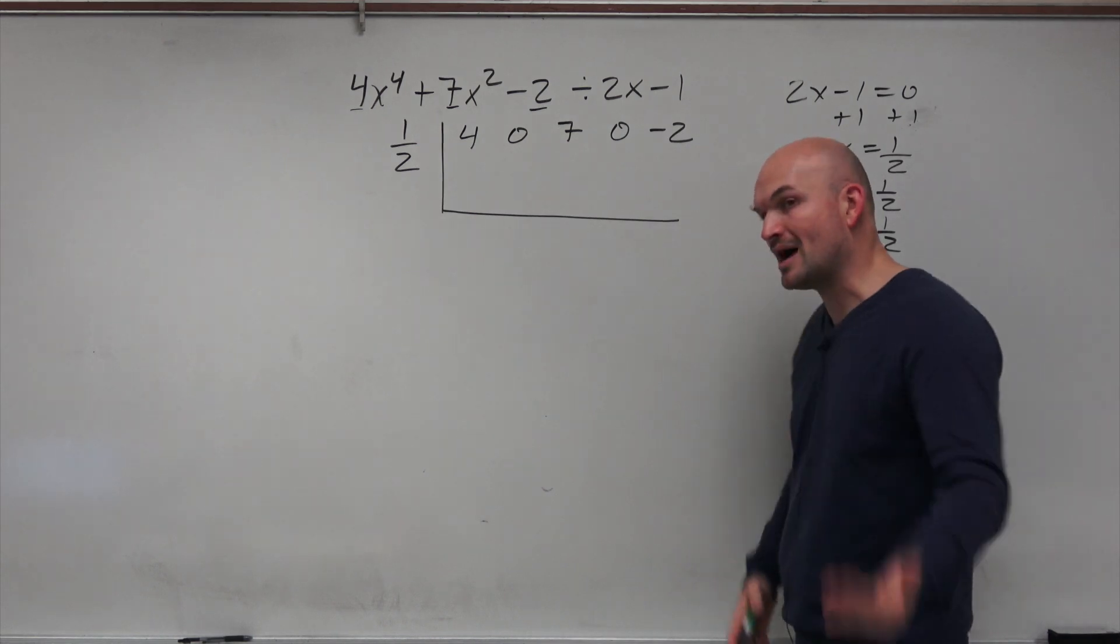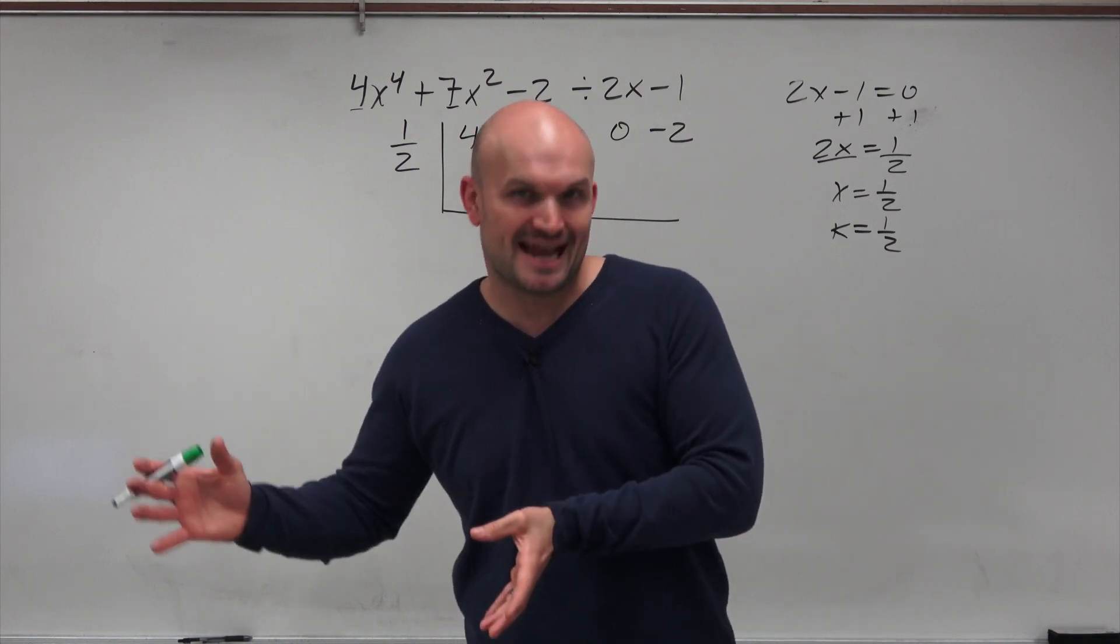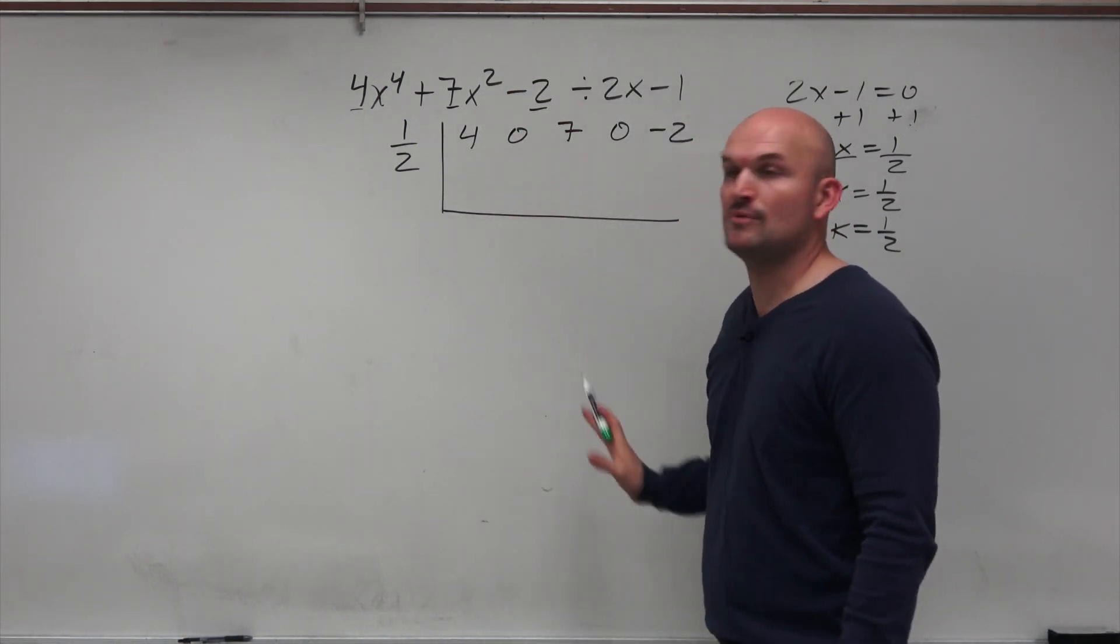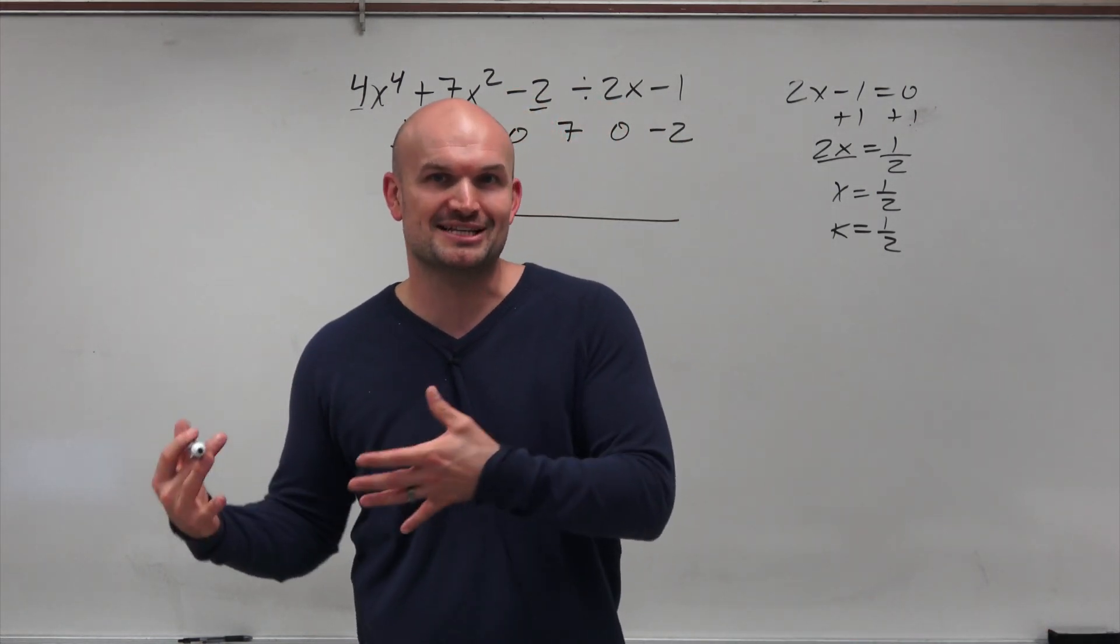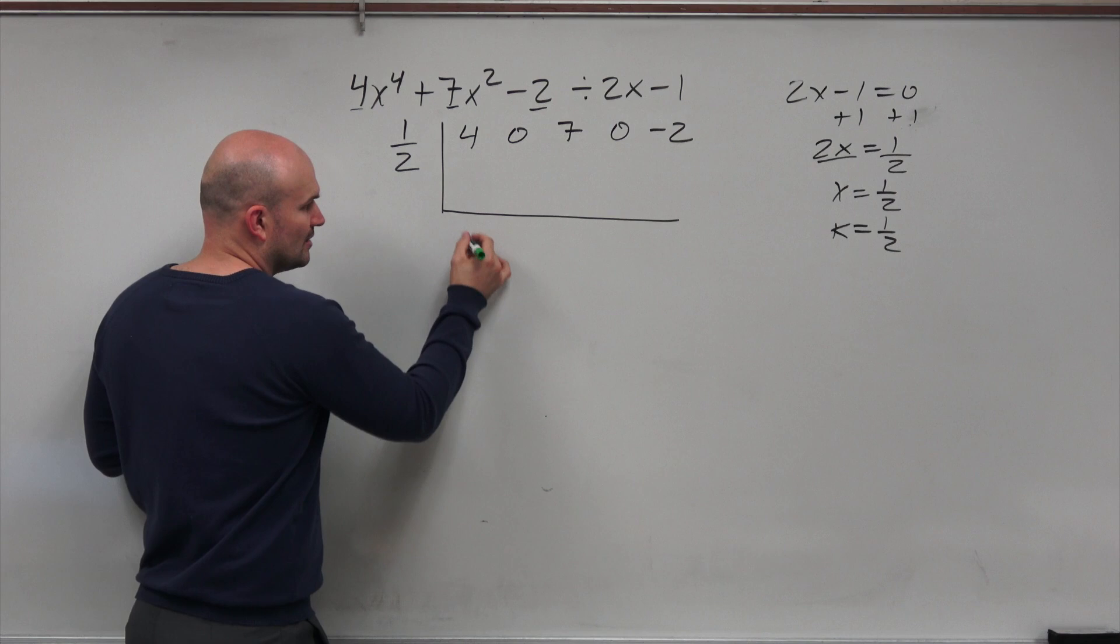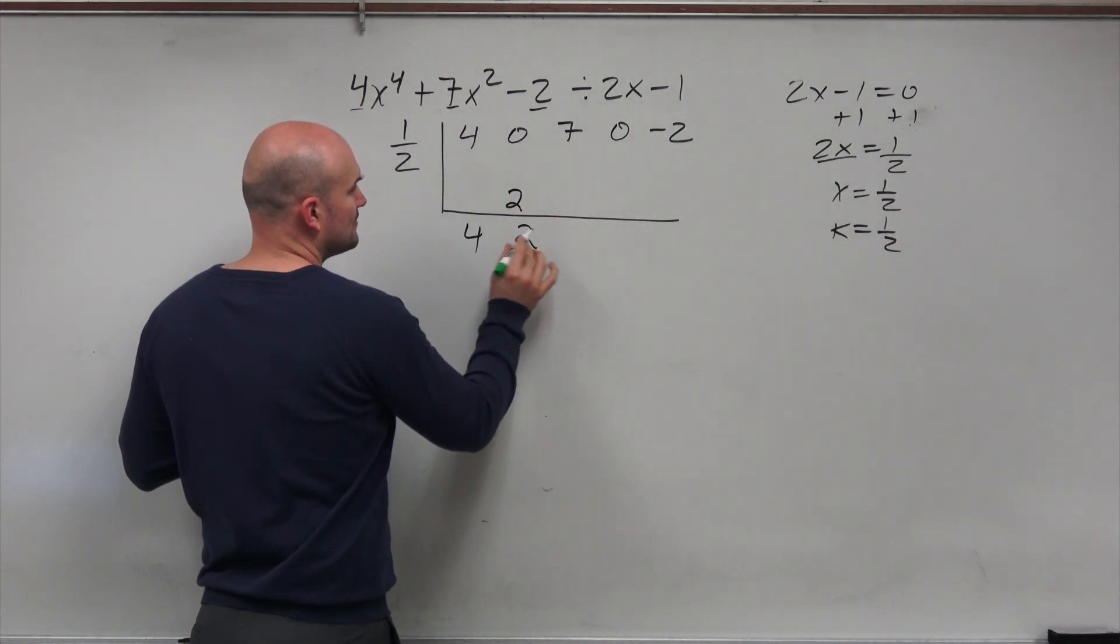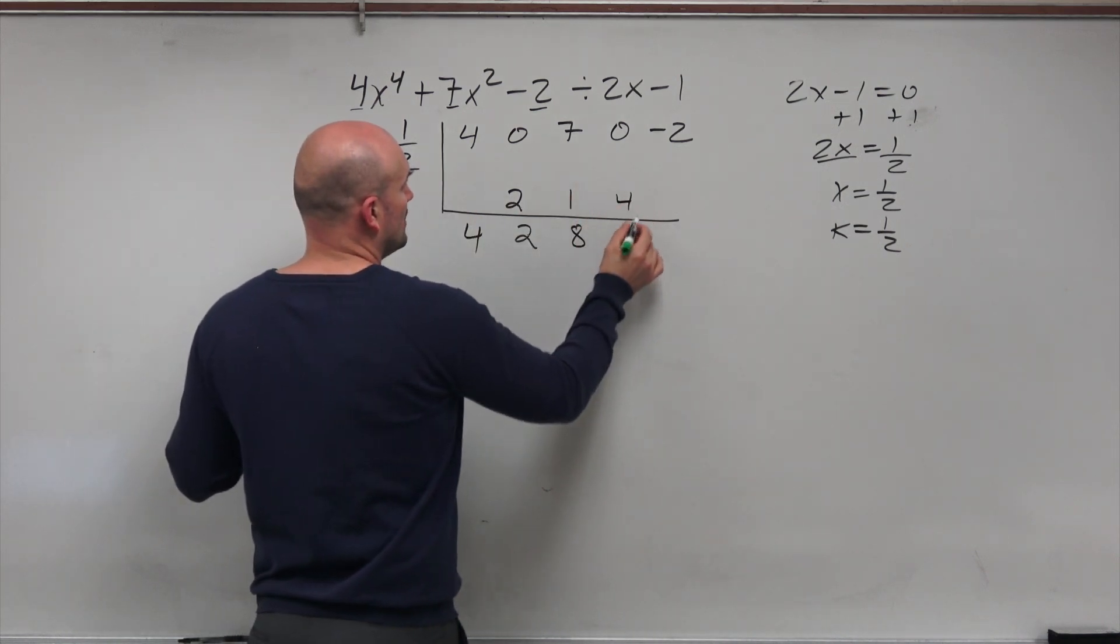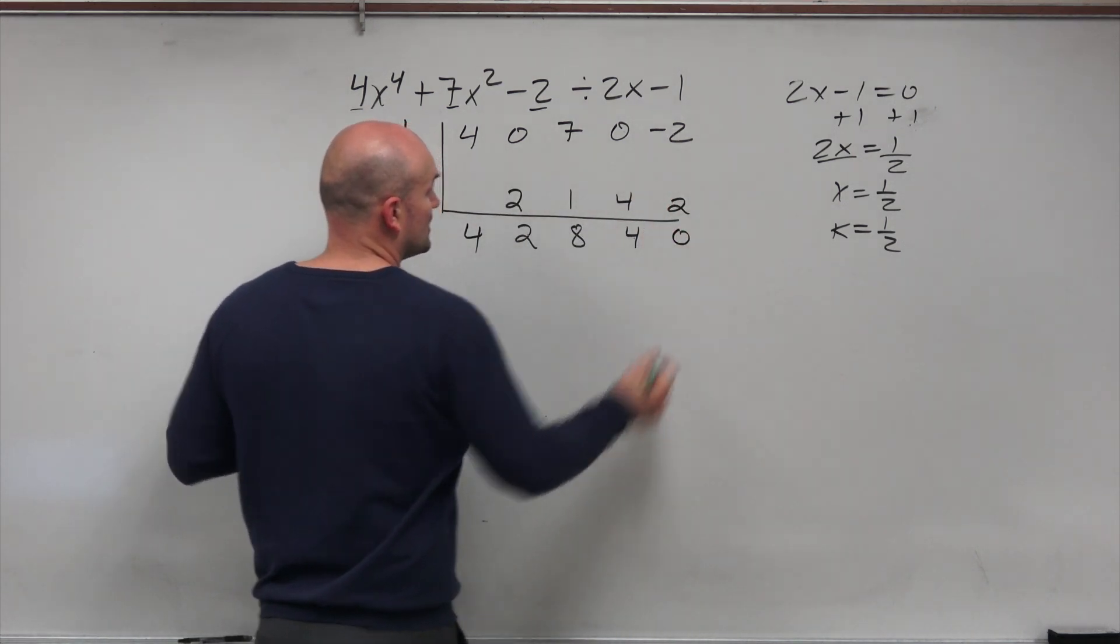Most students do OK with the actual process of synthetic division, which I'll run through real quick so I can show you the mistakes that students make on the final answer for synthetic division. Just to kind of recall, you're always going to be adding on the vertical and multiplying on the diagonal. And that's why most students like synthetic division over long division, because rather than actually dividing and subtracting, you're multiplying and adding. In this case, I'm just going to bring down, I'm going to say 4 plus 0 here, or just bring down the 4. Then you're going to multiply on the diagonal. 4 times 1 1⁄2 is 2. 0 plus 2 is 2. 2 times 1 1⁄2 is 1. 7 plus 1 is 8. 8 times 1 1⁄2 is 4. 0 plus 4 is 4. 4 times 1 1⁄2 is 2. Negative 2 plus 2 is 0.